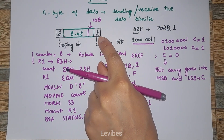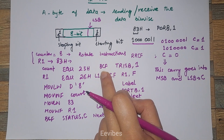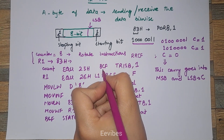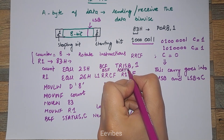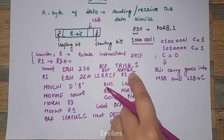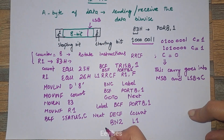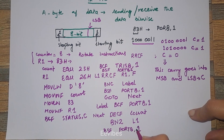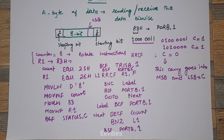One thing I skipped: before transmitting the data, you must send the high pulse for data framing — BSF PORTB, 1 — to signal the start of transmission. Similarly, once you are done transmitting all 8 bits, you need to set BSF PORTB, 1 again to indicate that one complete byte has been transmitted serially. This is how serialization is implemented in the PIC microcontroller.